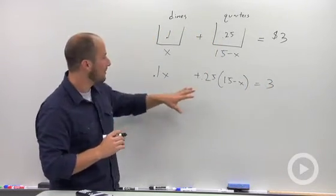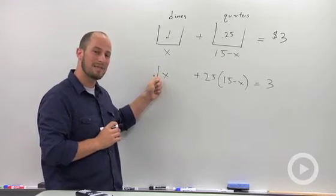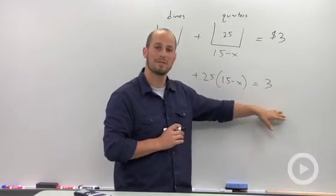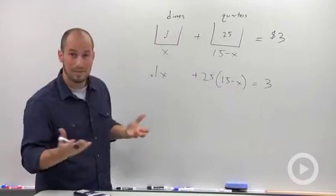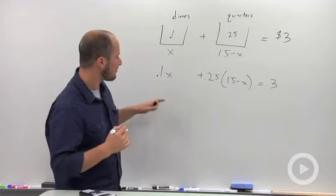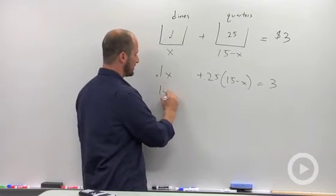Just to make sure you understand what we have: this is the amount of money we have in dimes plus the amount of money we have in quarters is equal to the total amount of money that we have. From here, linear equation. 0.1X stays the same.